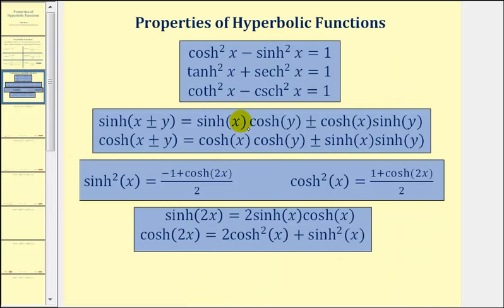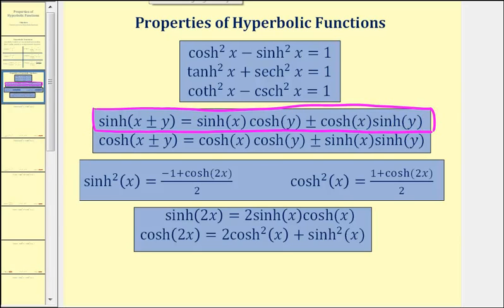We've already proved a couple of these properties, but in this video we're going to focus on this property here, which, because of the plus or minus sign, is actually two properties. We'll focus on the sum identity for the hyperbolic sine function, meaning we'll prove that hyperbolic sine of x plus y is equal to hyperbolic sine of x times hyperbolic cosine of y, plus hyperbolic cosine of x times hyperbolic sine of y.